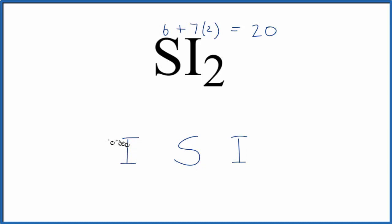Then we'll put a pair of electrons between atoms to form a chemical bond. There's 2. We've used 4 valence electrons, we have a total of 20 for this SI2 Lewis structure.